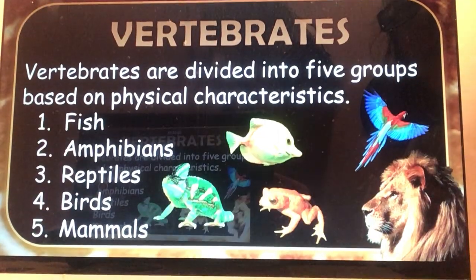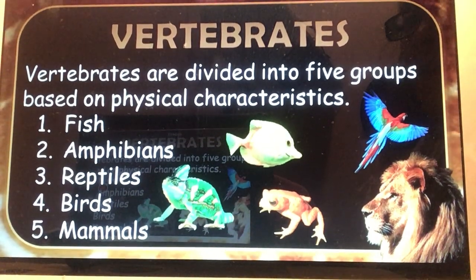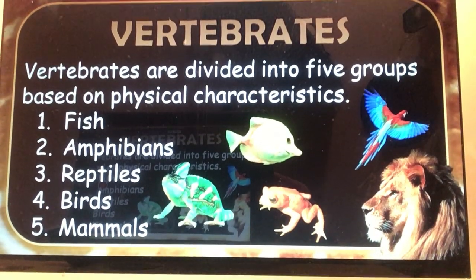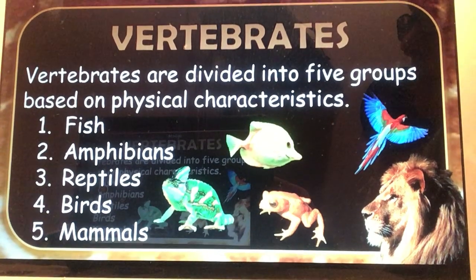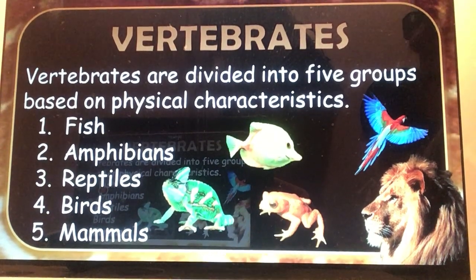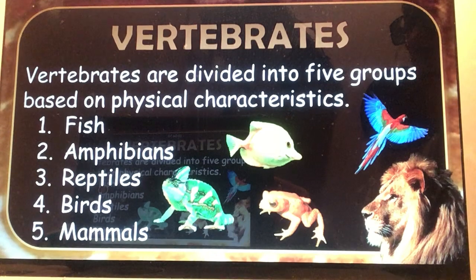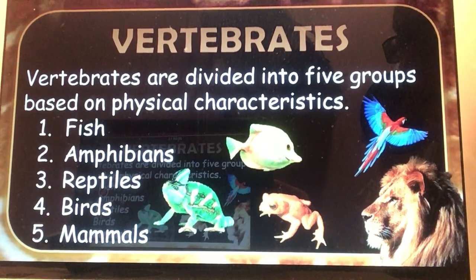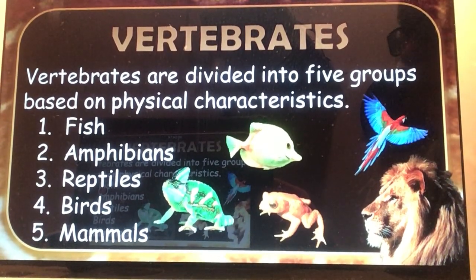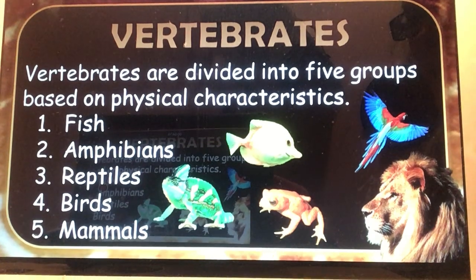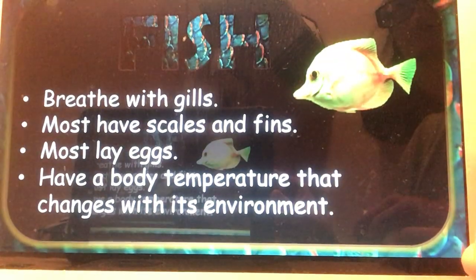Vertebrates are divided into five groups. So we're taking the kingdom of animals, bringing it down to vertebrates, and now narrowing it even further into five different groups: fish, amphibians, reptiles, birds, and mammals.